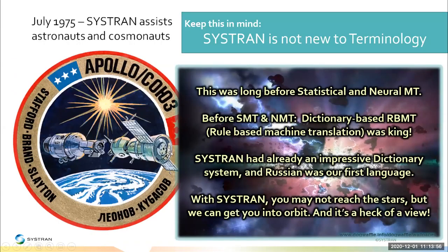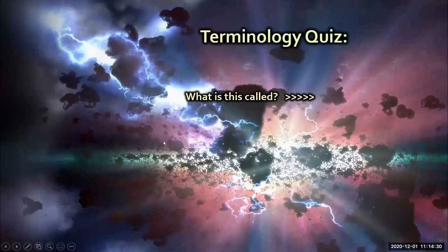This is not new to us. Back in 1975, SysTran was selected to help the cosmonauts and astronauts on Apollo-Soyuz. That was actually our first language pair: Russian to English and then the other direction. We had a really good dictionary system already — quite impressive and definitely usable to help astronauts and cosmonauts communicate, since they only had a few months to learn each other's language.